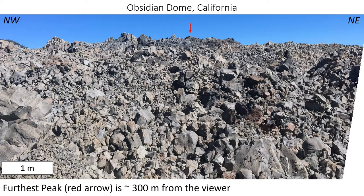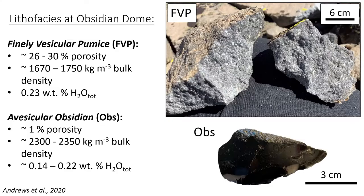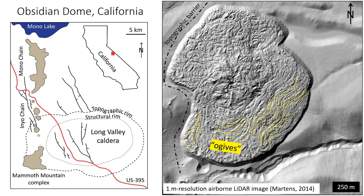This is what the top of a silicic lava looks like when you're standing on it and looking across — an ocean of gray talus with few black blocks speckled in between. That gray talus is mainly comprised of finely vesicular pumice, shown in the image to the right with its gray porous texture. Finely vesicular pumice is characterized by having 26 to about 30 percent porosity, a bulk density of about 1670 to 1750 kg/m³, and a total weight percent water content of about 0.23. The black blebs are obsidian, with a porosity of about 1 percent, a bulk density between 2300 and 2350 kg/m³, and a total weight percent water of 0.14 to about 0.22.